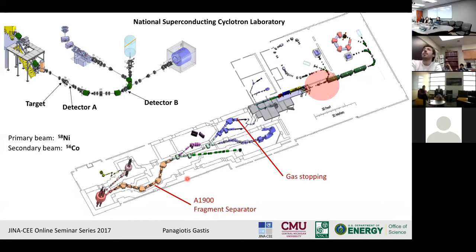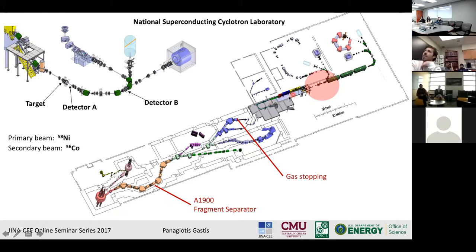The experiment will take place at NSCL. The cobalt-56 beam will be produced by fragmentation: a primary nickel-58 beam hits a beryllium target after the cyclotrons to produce cobalt-56 ions. After passing through the A1900 fragment separator to isolate the cobalt-56, it will be transported to a gas target to stop and then injected into the reaccelerator, where it will reach a final energy of about 4.1 MeV per nucleon. The experimental setup location is pointed out, along with the positions of the target and the two detectors needed for the experiment.